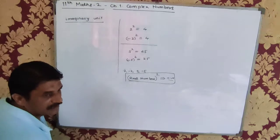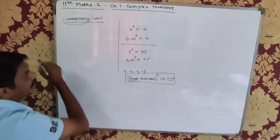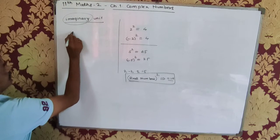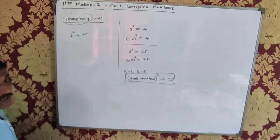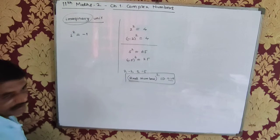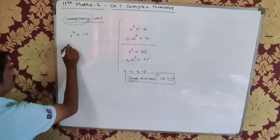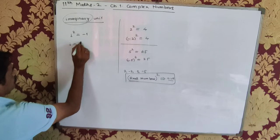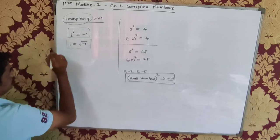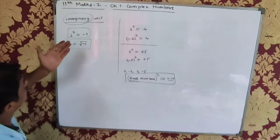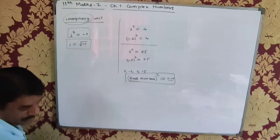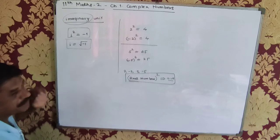In reality it will not be there, but in imagination it will be there. So we imagine one such number, i, whose square is equal to minus 1. We imagine this because this will not exist in reality, and that's why we call it the imaginary unit. If I take the square root of this, i is equal to square root of minus 1. So this is just an imagination. In mathematical form: i² = −1, or i = √(−1). This is called the imaginary unit.